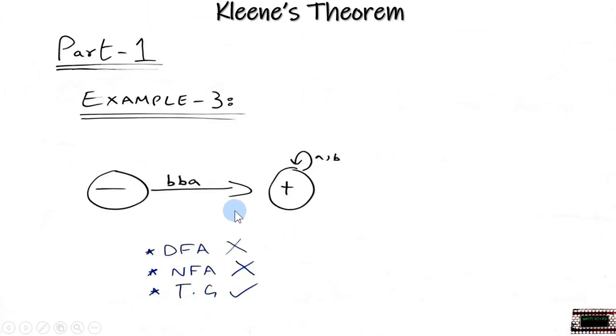Looking at the third example, we have a finite automata here which is not a DFA and neither it is an NFA, but it is still a TG.